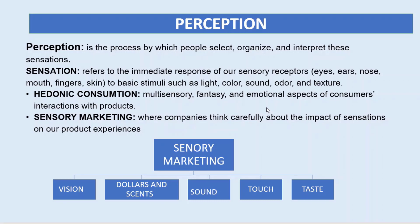First, the definition of perception: perception is the process by which people select, organize, and interpret sensations of a product. Sensation refers to the immediate response of our sensory receptors — such as eyes, ears, nose, fingers, and skin — to basic stimuli like light, color, sound, odor, and texture.